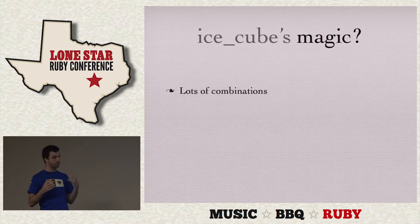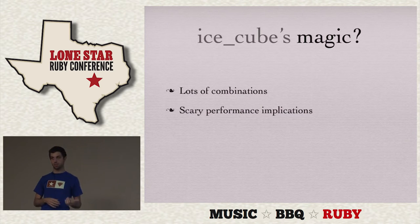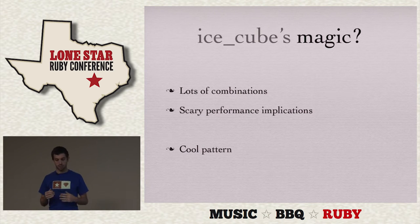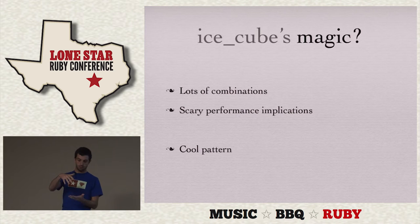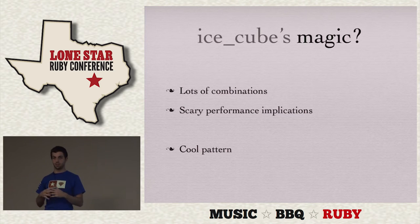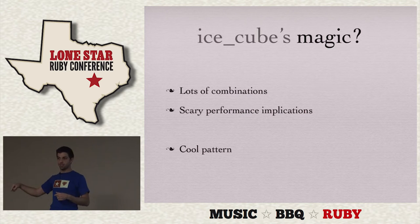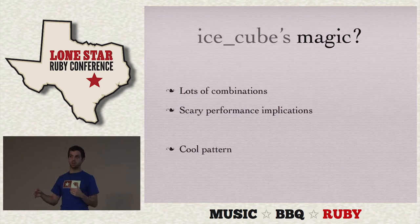I wanted to talk about IceCube's magic — what makes all of this possible and why it's not slow. There are a lot of combinations, and those combinations bring about scary performance implications. They came up with a cool pattern involving educated guesses. Every validation on a rule submits the closest date it could happen on. So if I'm a day_of_week Friday validation, I say the closest day I could happen is this upcoming Friday. And if there's a day_of_month 13 validation but it's the 20th, it says the closest I could possibly happen is next month on the 13th. We take all of those, take the farthest away one and jump to that — skipping all the time in between. That's how IceCube is able to be really quick.